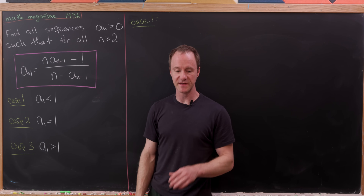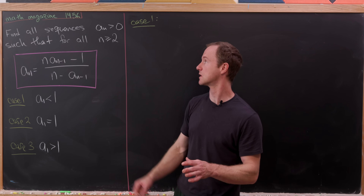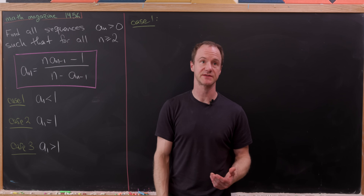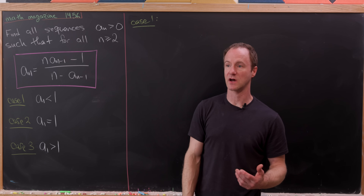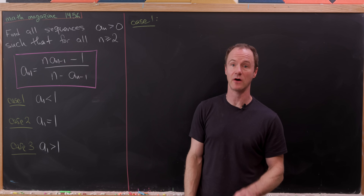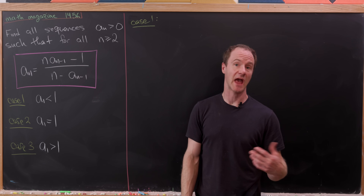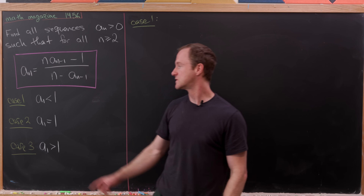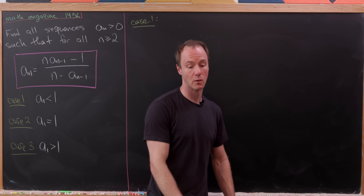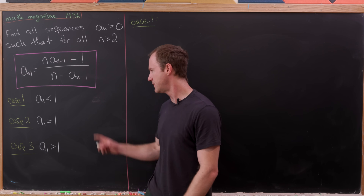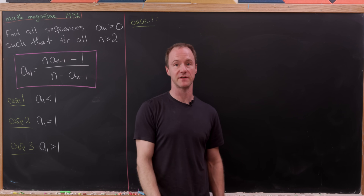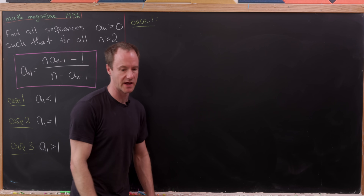We're going to break this into a couple of cases, because any sequence satisfying this recursion is built off of its seed. We need to find the possible values of a₁. We start with the possibility that a₁ is less than 1. Since it must also be positive, that means a₁ is between 0 and 1.